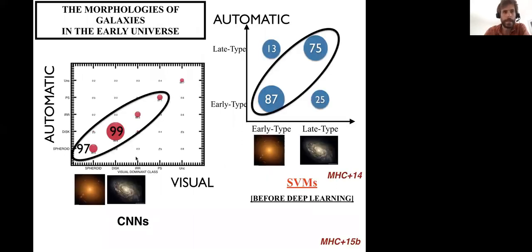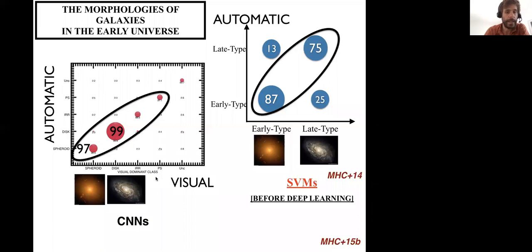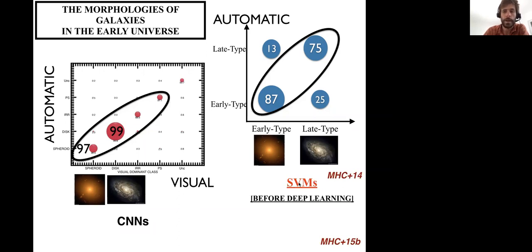Classification is an obvious thing, and in galaxy evolution one obvious application is morphological classification of galaxies. It has been shown in many papers that deep learning can really solve this. This plot shows, for high-redshift galaxies, the agreement between visual classification on the X-axis and automatic classification on the Y-axis — the agreement is very good, around 90%. Before the deep learning revolution, even with previous machine learning techniques such as kernel machines, the agreement was not so high. So this is an example where deep learning jumps in and really solves the problem.